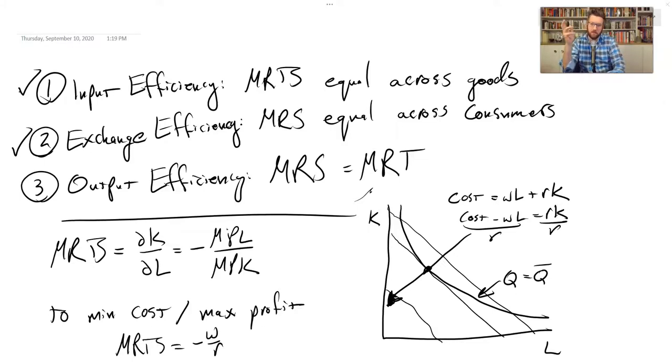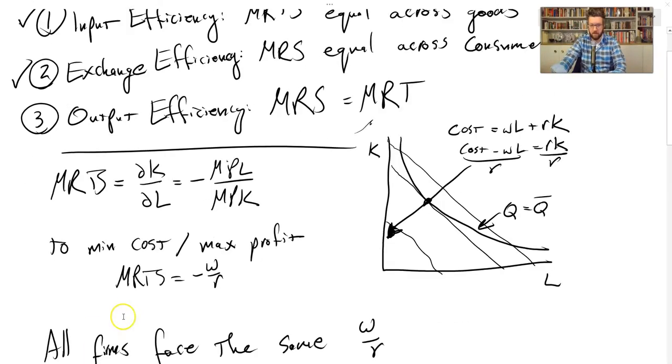Alright, on to the last one. This one does use a slightly different argument, but ultimately prices are still going to be the bridge between the marginal rate of substitution and the marginal rate of transformation. So let's talk about output efficiency.